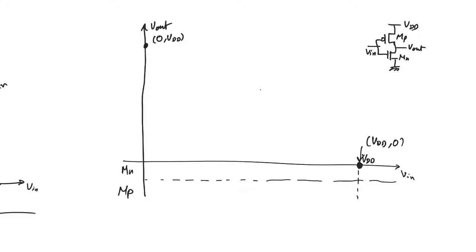We also know that when the output is VDD, the NMOS is cutoff and the PMOS is ohmic. We also know that when the output is 0V and the input is VDD, the NMOS is ohmic and the PMOS is off. Again, this comes from the static solution of the inverter.